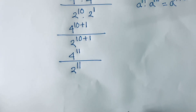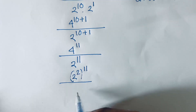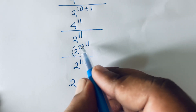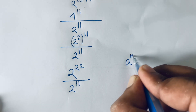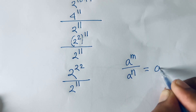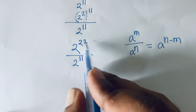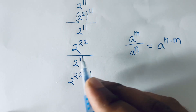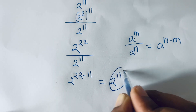We know that 4 equals 2 to the power 2, so 4 to the power 11 equals (2^2)^11 = 2 to the power 22. Using the rule a^m / a^n = a^(m−n), we get 2 to the power 22 over 2 to the power 11, which equals 2 to the power 22 minus 11 = 2 to the power 11. This is our final answer.